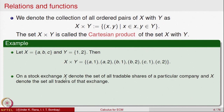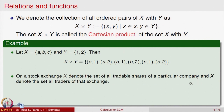In our stock exchange example, let X denote the set of all tradable shares of a particular company and Y denote the set of all traders of that exchange. Then for n belonging to X — the number of shares traded — and a trader y belonging to Y, we get an ordered pair (n, y), which is an element of X cross Y. That is how ordered pairs and Cartesian products come into existence.